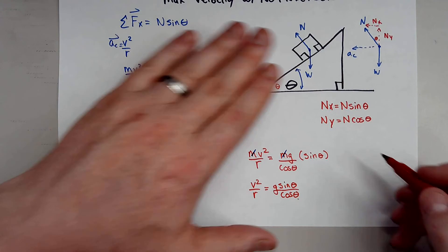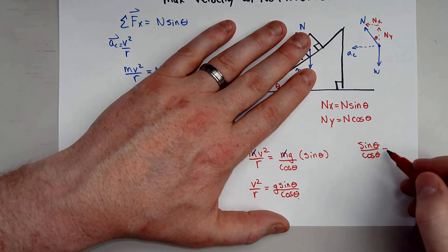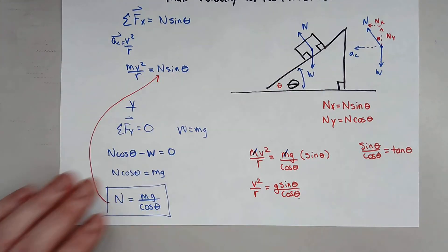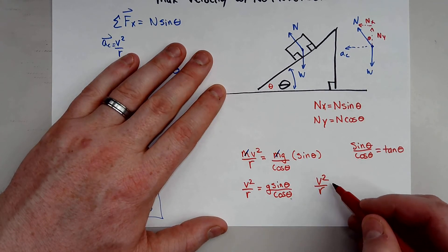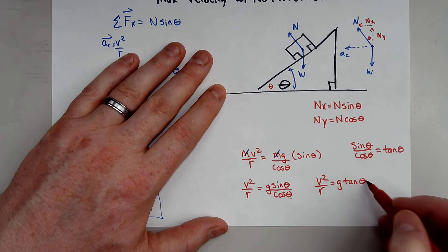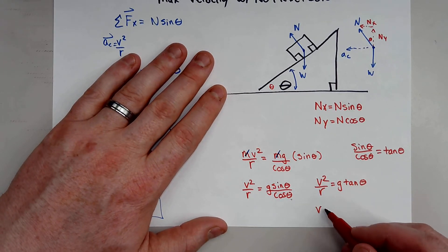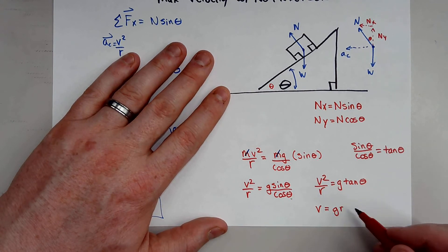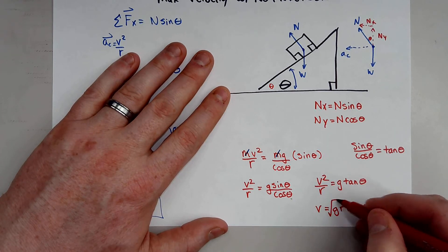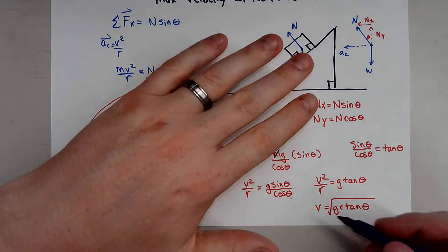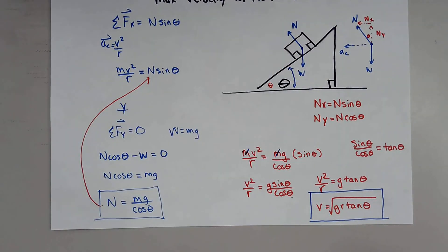And we actually see here that the trig identity, sine theta divided by cosine theta, actually gives us tangent of theta. So I can go ahead and rewrite this as v squared over r equals g tan theta. So now solving for the maximum velocity the car can go around any corner will give me square root of gr tan theta. And this is the actual equation for the maximum velocity a car can go around a bank curve with no friction.